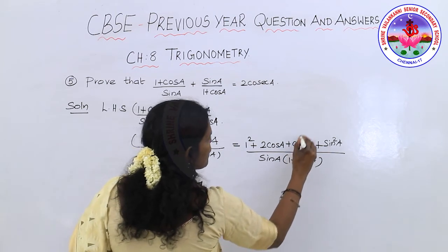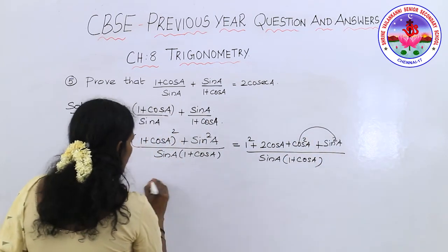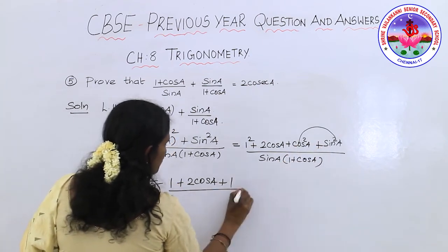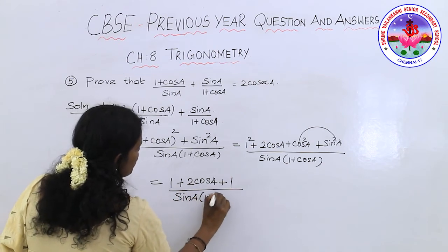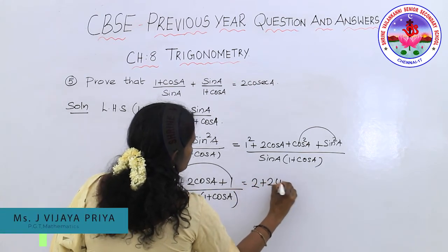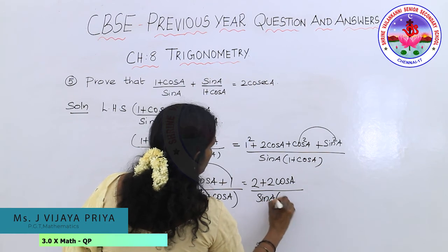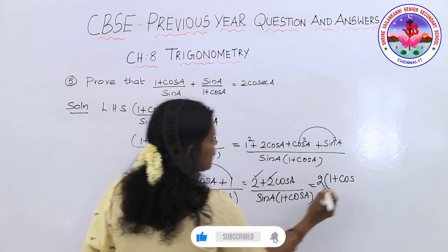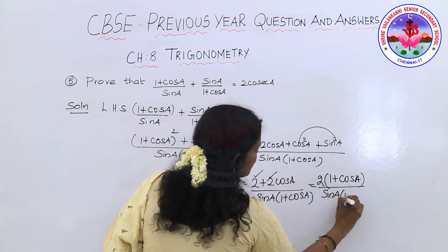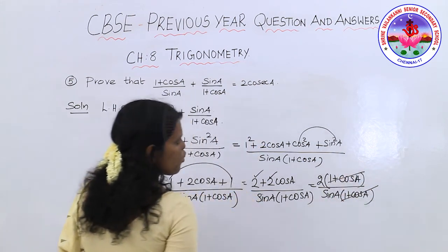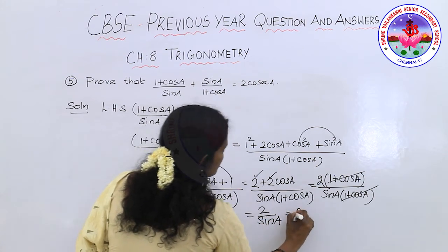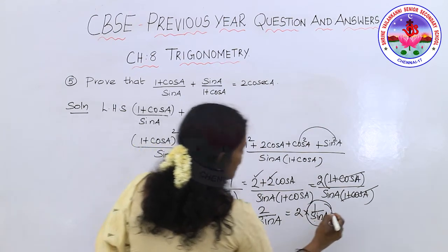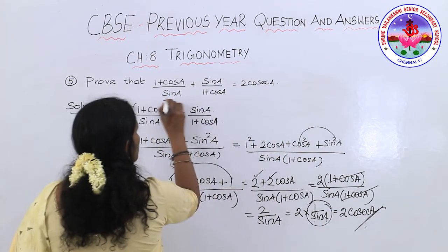Using the trigonometric identity sin²A + cos²A = 1, the numerator becomes 1 + 2cos A + 1 = 2 + 2cos A. So we have (2 + 2cos A) / [sin A · (1 + cos A)]. Taking 2 as a common factor from the numerator: 2(1 + cos A) / [sin A · (1 + cos A)]. The (1 + cos A) terms cancel, leaving 2/sin A = 2 · (1/sin A) = 2cosec A. Hence LHS = RHS.